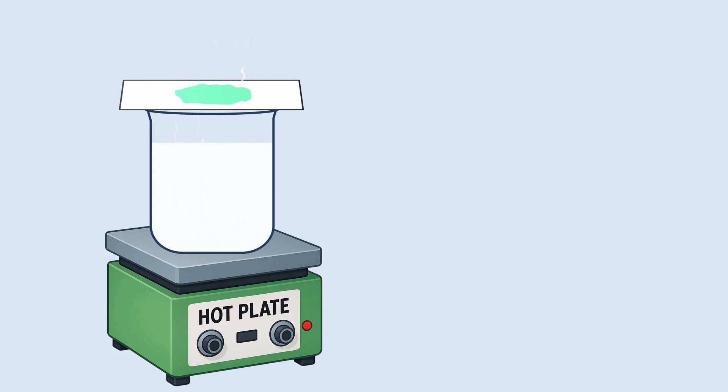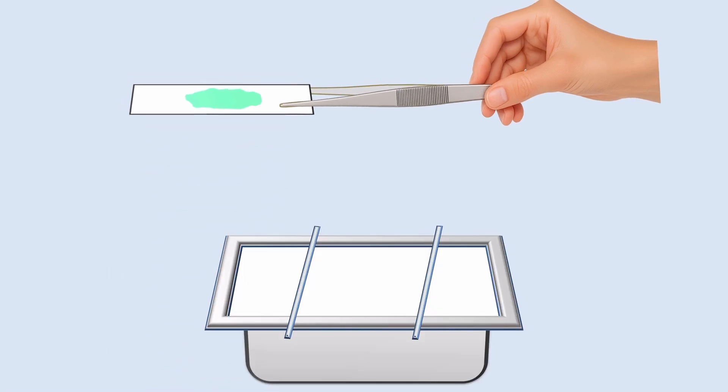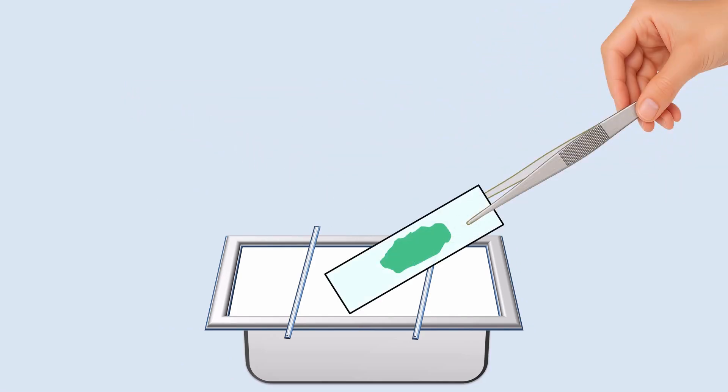After steaming, carefully remove the slide from the hot plate using forceps and cool the slide. Now hold the slide on the staining tray at an angle, ensuring that the stained smear is facing outward. The next step is to wash off the excess stain using tap water.